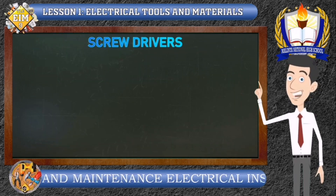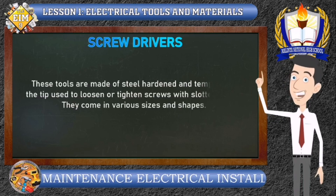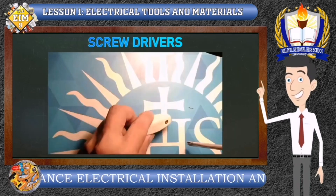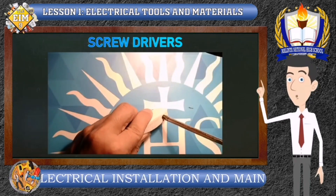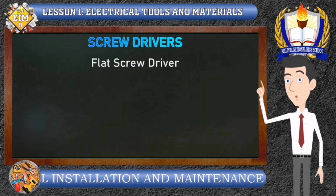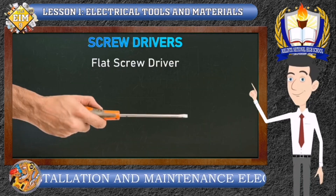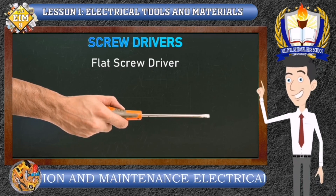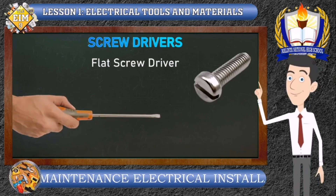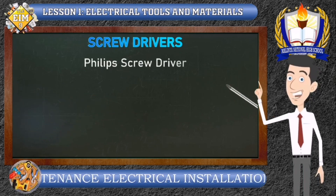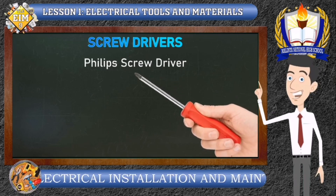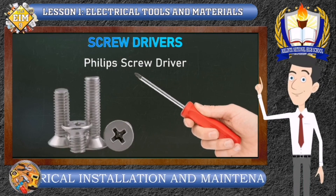Number 1: Screwdrivers. These tools are made of steel, hardened and tempered at the tip, used to loosen or tighten screws with slotted heads. They come in various sizes and shapes. We have the flat screwdriver, whose blade tip is wedge-shaped and resembles a negative sign; this is used to drive screws with a single slot head. Next is the Phillips screwdriver, which has a cross tip resembling a positive sign; this is used to drive screws with cross-slotted heads.